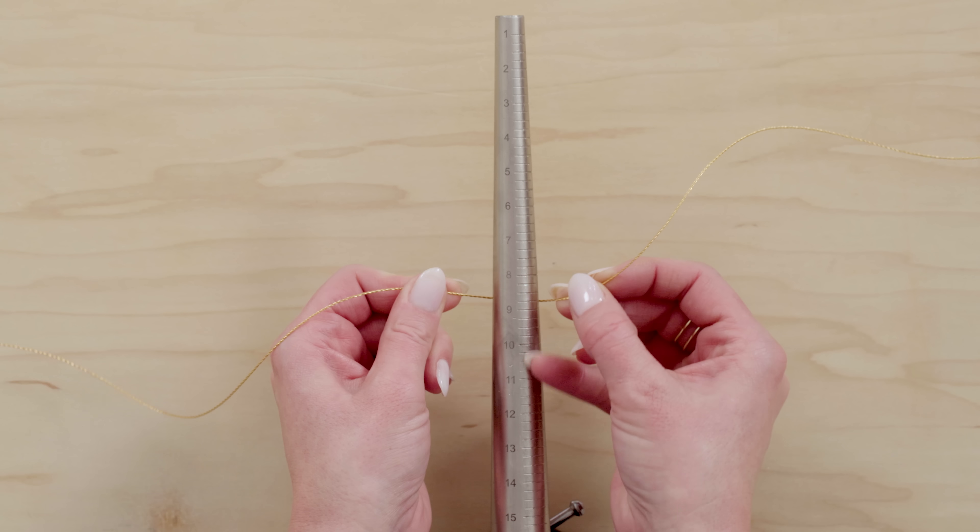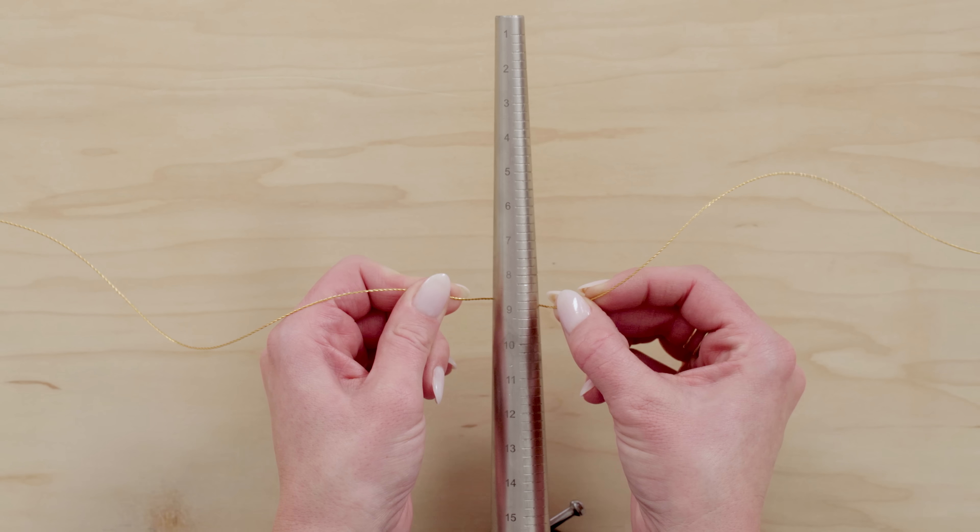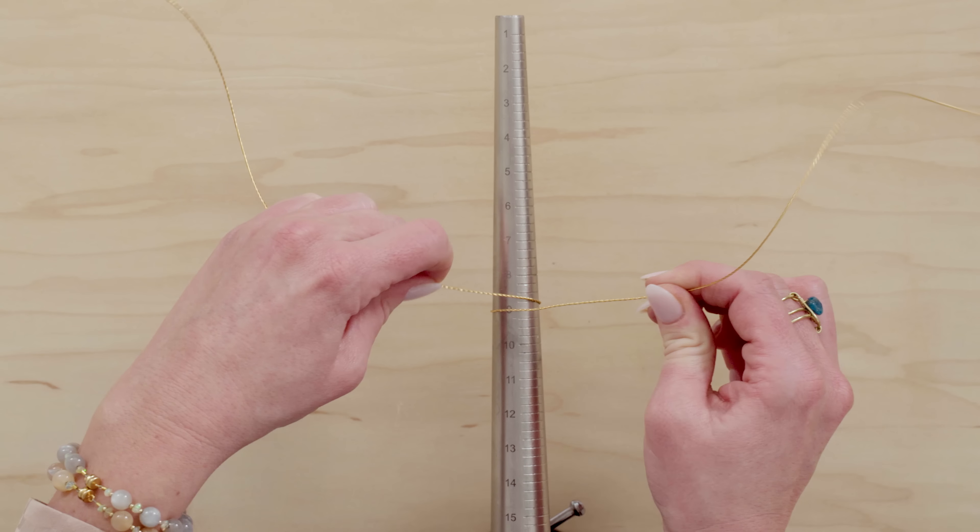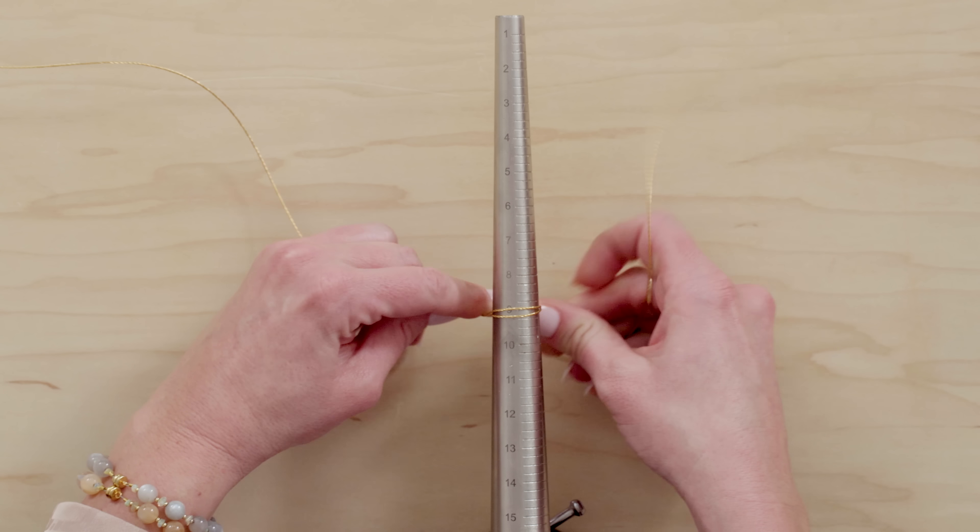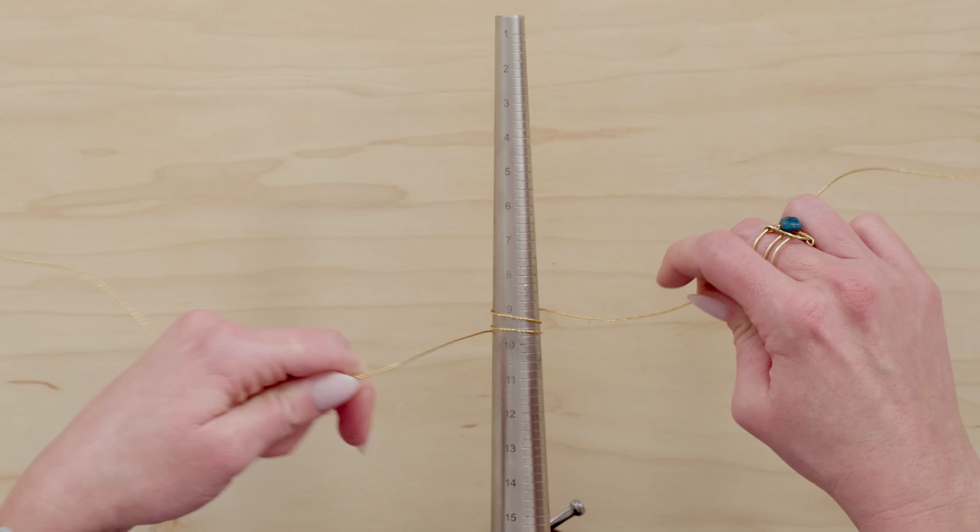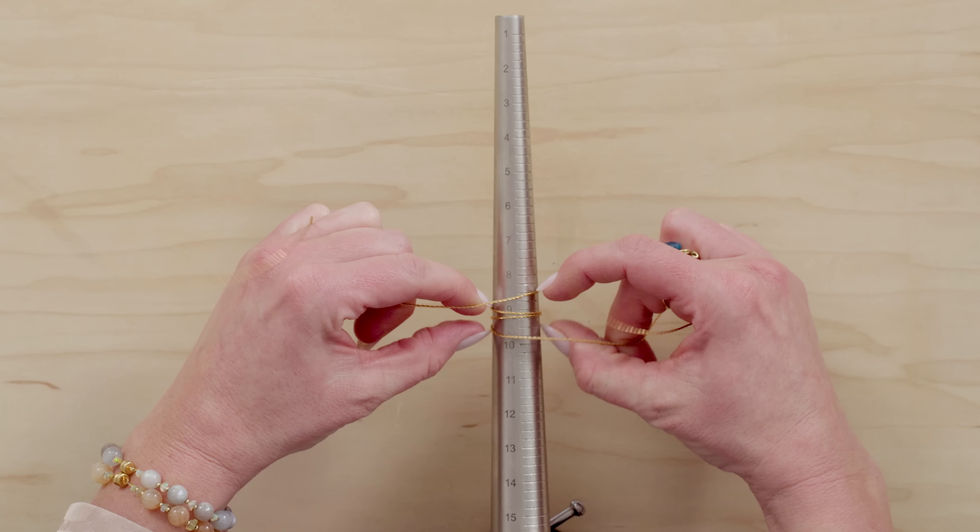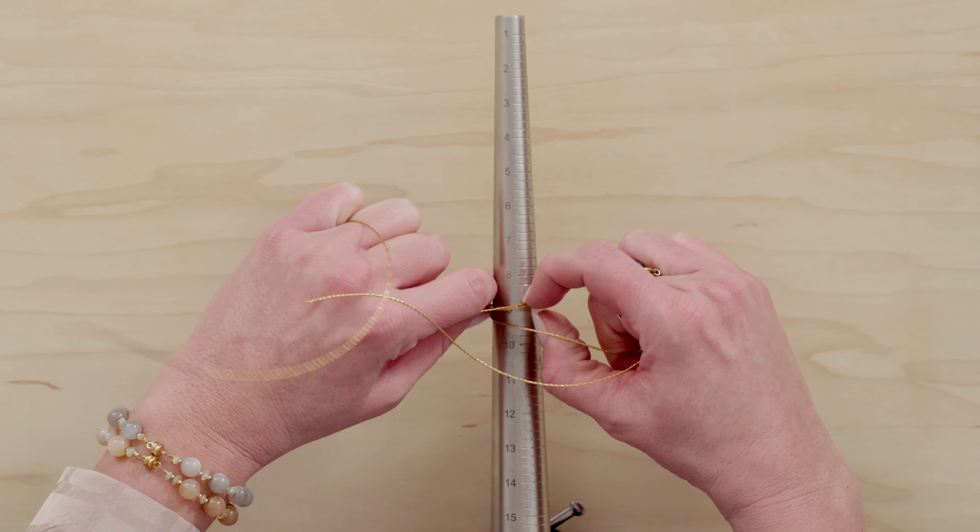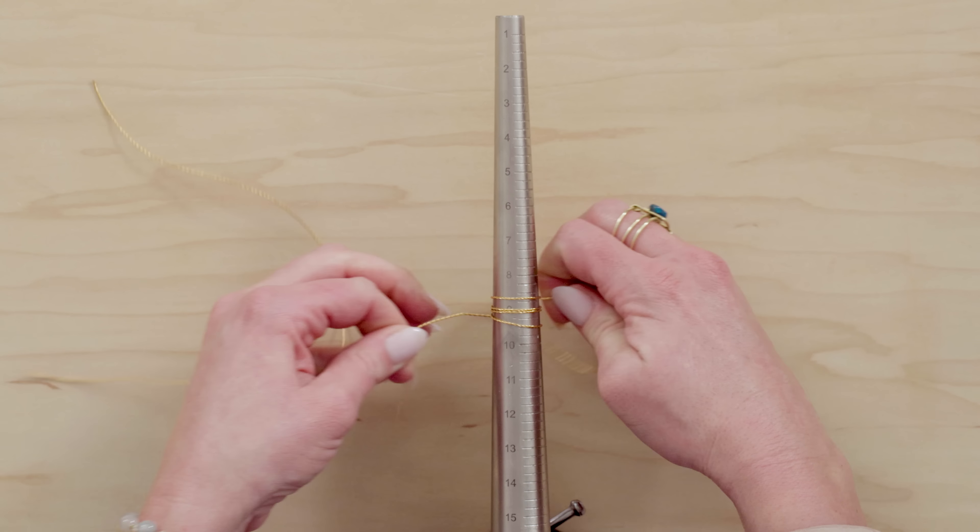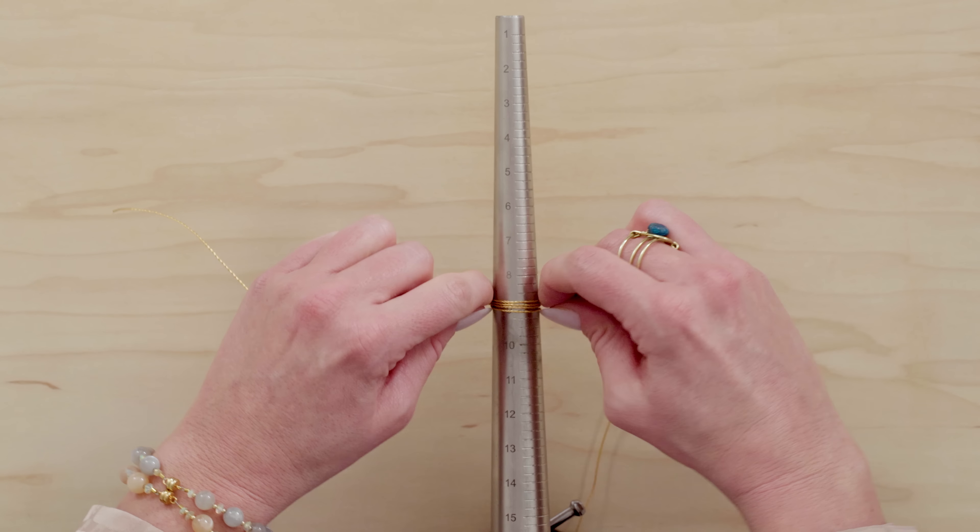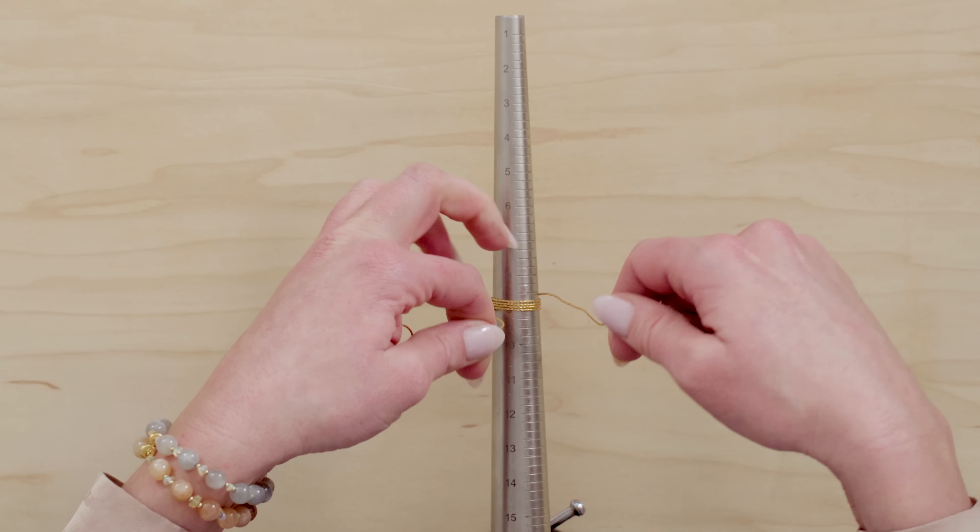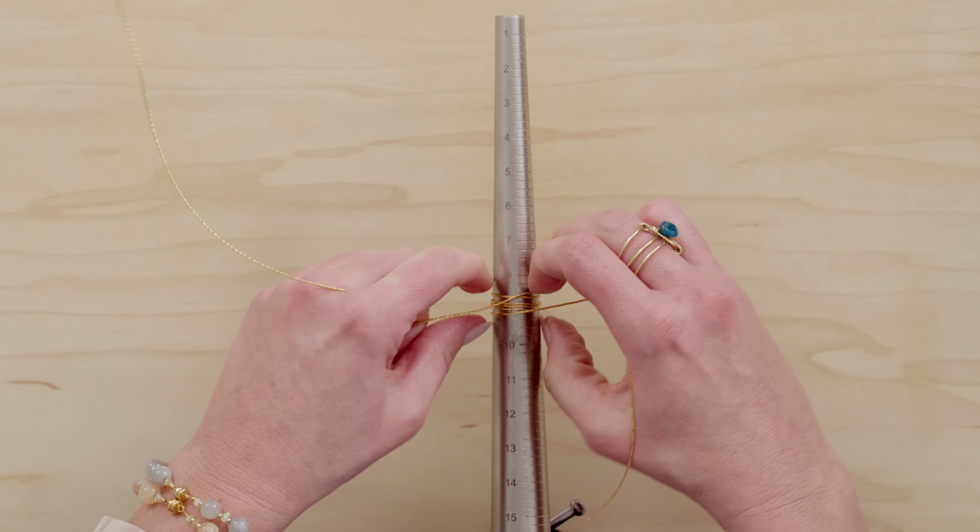Find the center of your wire and place that underneath the number on your mandrel. So I'm going to be working on that nine. Bring both sides up and wrap three to four times with each tail. And you want to just kind of stack them together as you go making sure you're still on that number. And this is going to be the band of your ring.